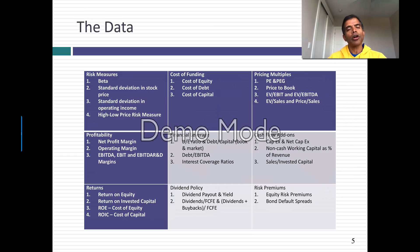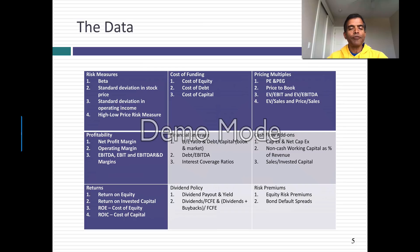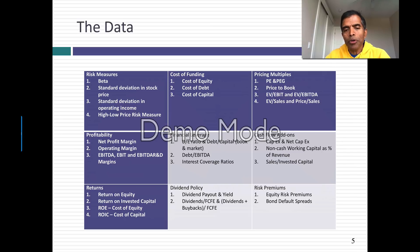For the cost of funding measures, I compute the cost of equity, cost of debt, and cost of capital. I do everything in US dollars simply to keep the numbers comparable across companies, but I give you a very simple way of converting these numbers into a different currency if that's your objective. I look at measures of financial leverage: debt to equity and debt to capital numbers, both on a book and a market basis. I look at debt as a percentage of EBITDA, just to see how much companies have borrowed relative to their operating cash flow, and I look at interest coverage ratios to see how comfortable they are making interest payments.